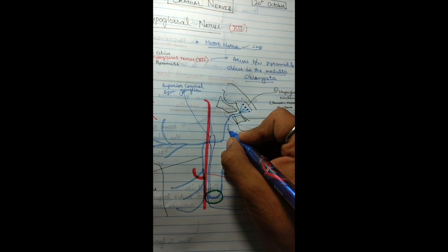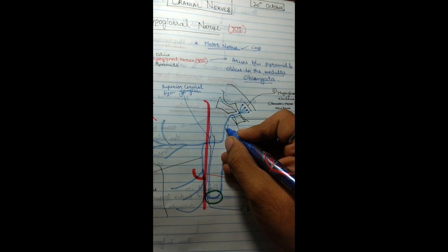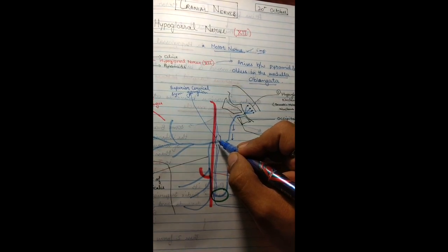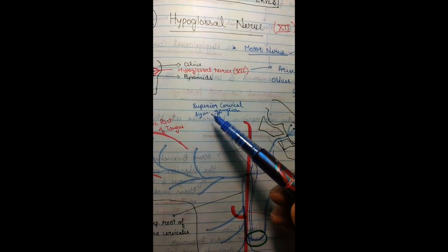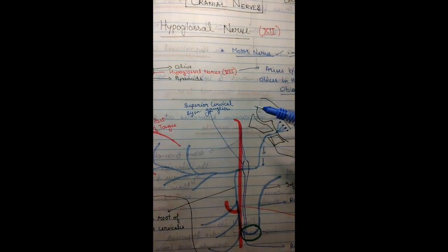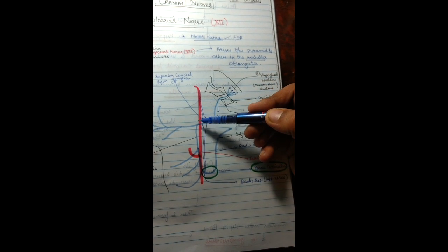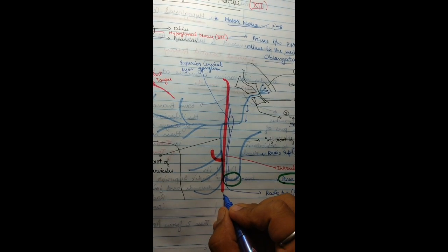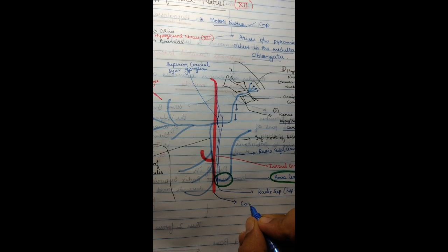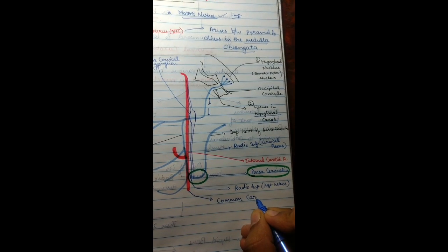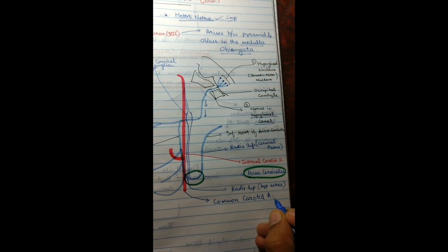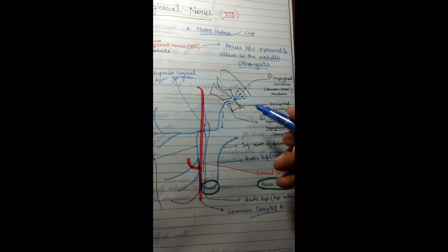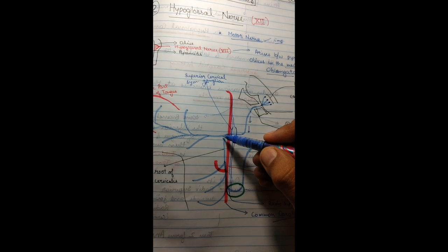After crossing the hypoglossal canal in the occipital condyle, the nerve travels downwards and laterally to the internal carotid artery. It passes through the superior cervical sympathetic ganglion. As clearly described here in the diagram, it passes laterally to the internal carotid artery, which is a part of the common carotid artery. From the hypoglossal canal it moves downwards, through the superior cervical sympathetic ganglion, and laterally to the internal carotid artery.